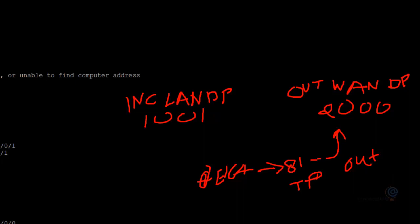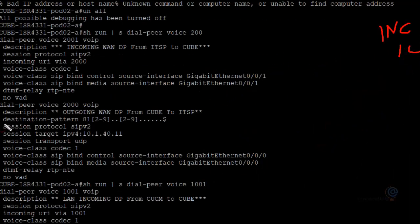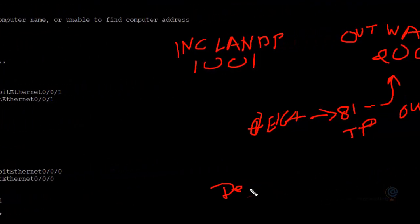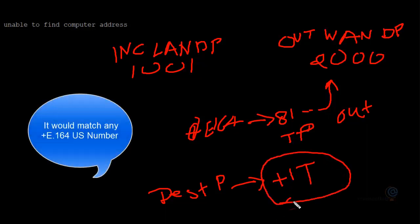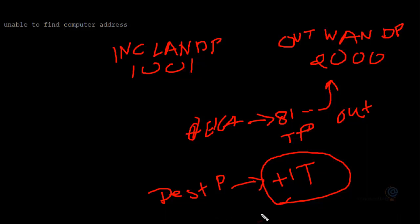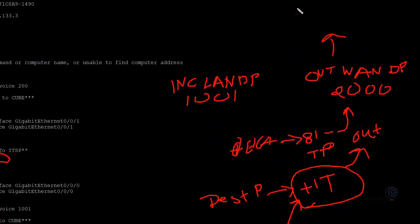We'll also remove the current destination pattern, because '8-1' doesn't match '+1'. Instead, we'll set the destination pattern to '+1' followed by any digits, so it matches any plus E.164 number. Once the call matches this outgoing dial peer, the translation profile will translate the number before it goes out to the service provider, and the call should work.